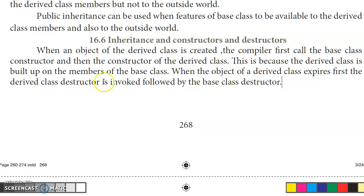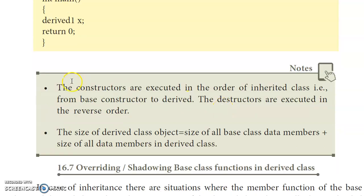The first derived class destructor is invoked, then the base class destructor is executed. Constructors execute in the order of the inherited class — from base class to derived class. Destructors execute in reverse order. This is the key concept regarding constructors and destructors in inheritance.